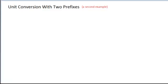All right, we're going to do another unit conversion with two prefixes and this time we're going to look at the question, how many micrograms is 1.2 times 10 to the minus 4 kilograms?